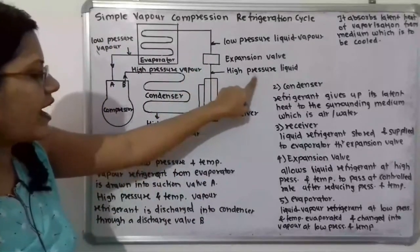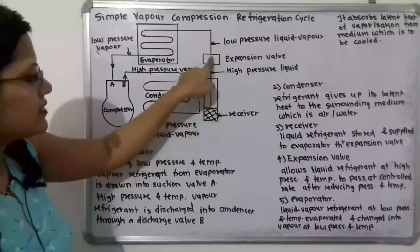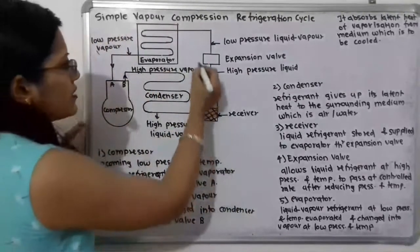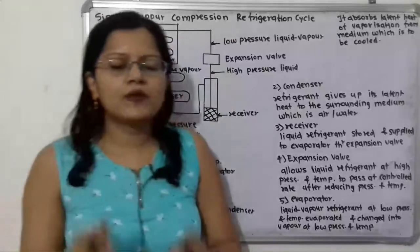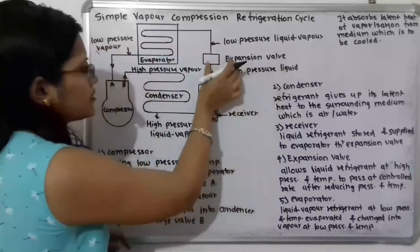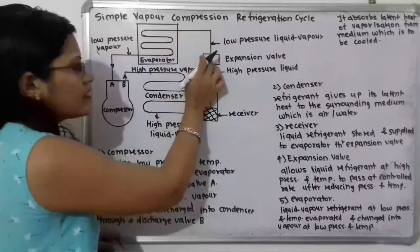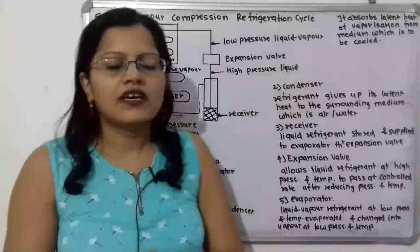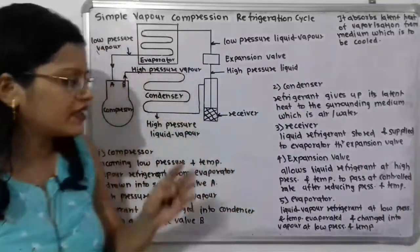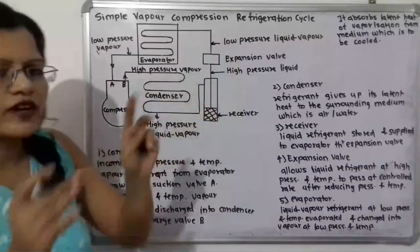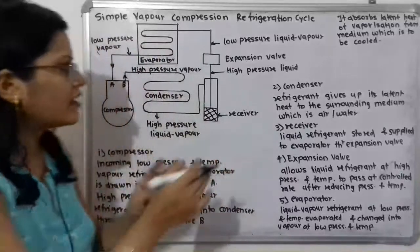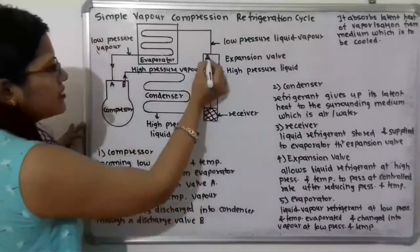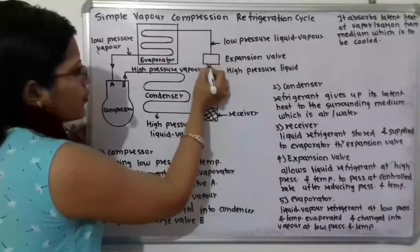The function of the expansion valve is to allow the liquid refrigerant at high pressure and high temperature to pass to the evaporator at a controlled rate. This is very important. Here, partial expansion is taking place, meaning this high pressure and high temperature liquid refrigerant is getting converted into a somewhat reduced pressure and temperature state.